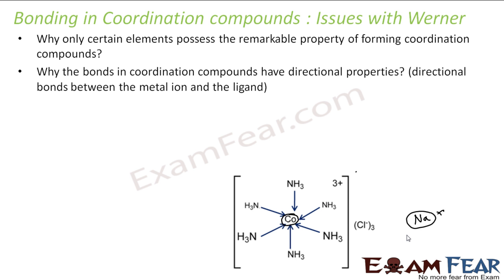He could not explain the bidirectional property. There is a bidirectional property in the bond between the metal and the ligand. The lone pair of electrons is donated by nitrogen, for example. This is a bidirectional bond because the bond is not due to mutual sharing of electrons — it is due to the electron pair donated by the ligand. Werner theory could not explain this.